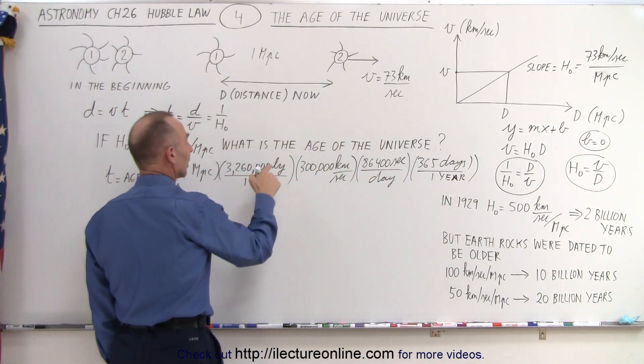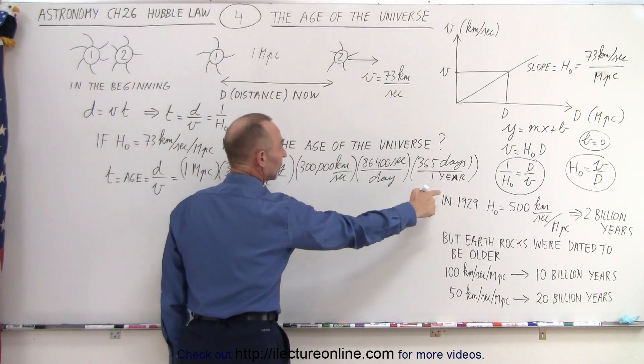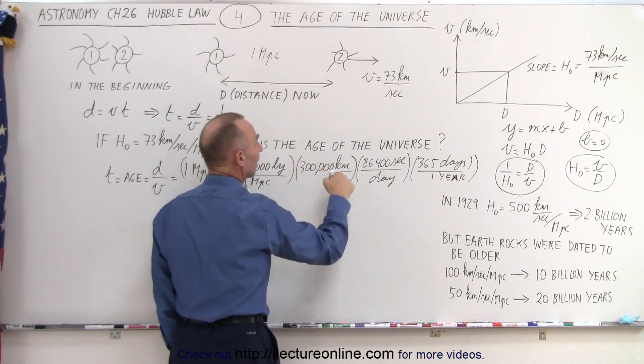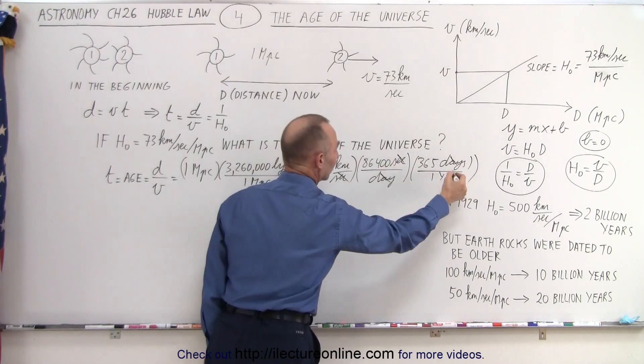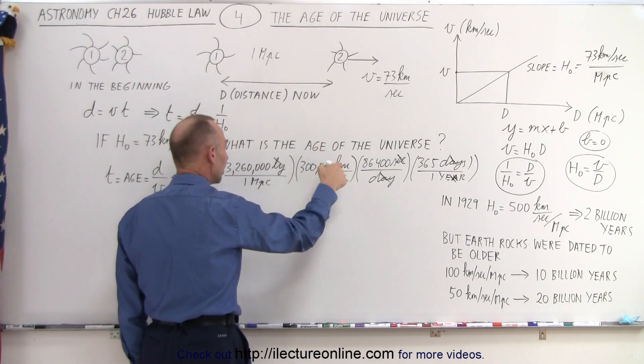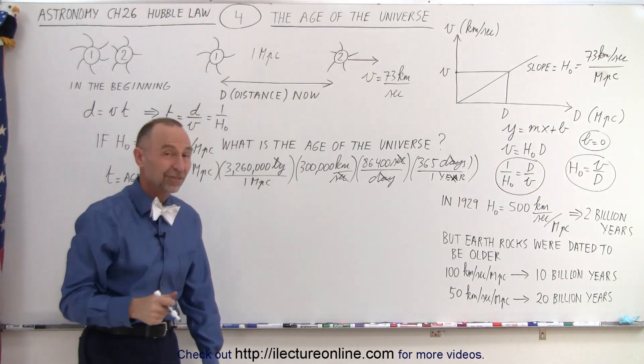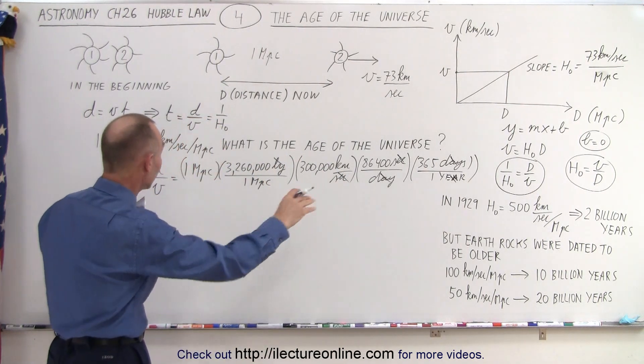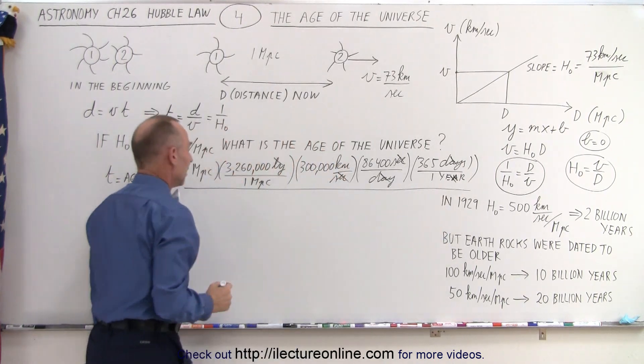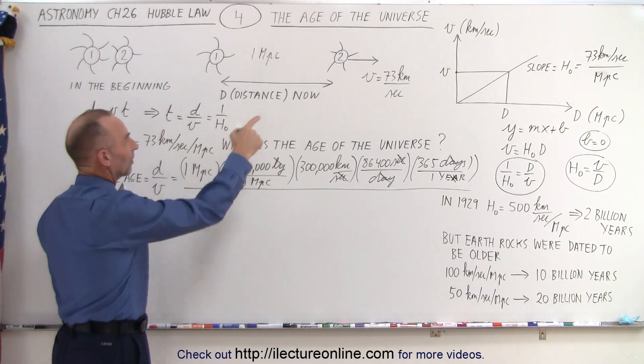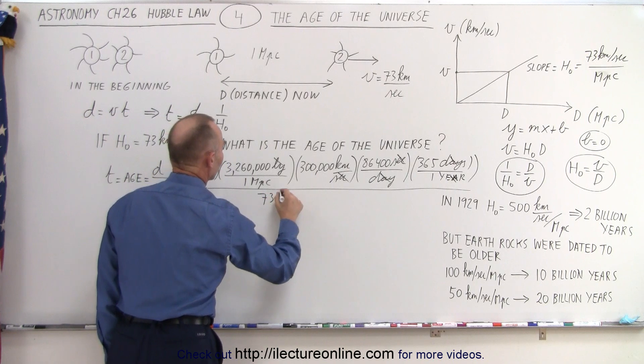And now we convert light years to kilometers, because years will cancel out years, and we end up with kilometers. Seconds cancel out seconds, days cancel out days, and years cancel out light years. So that becomes kilometers per megaparsec. Now we have the proper distance in kilometers. Now we have to divide that by the velocity, and the velocity is 73 kilometers per second.